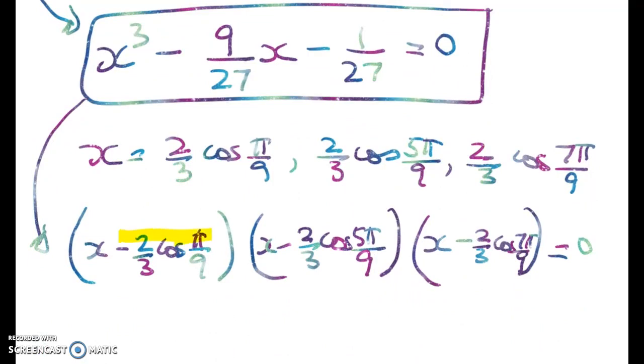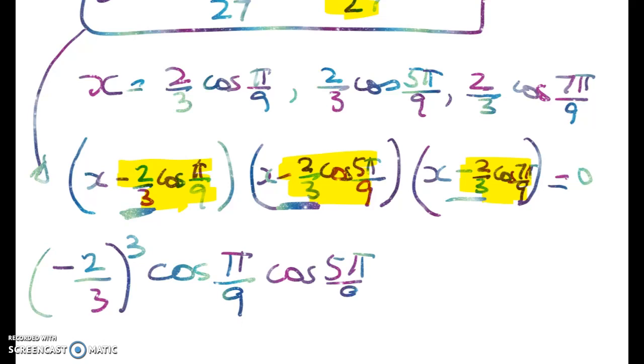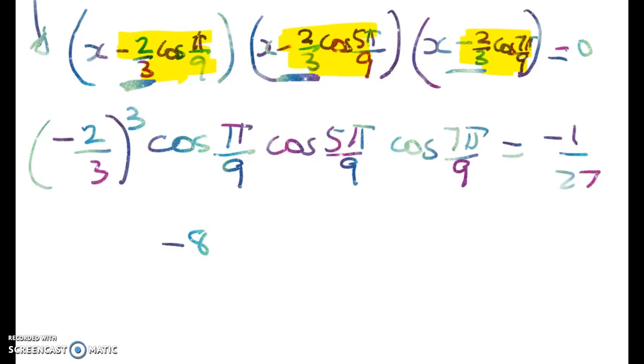So what can I say here? Well, if I do the same thing, if I multiply this times this times this, that's got to give me negative 1 over 27, which is pretty cool because now I can say negative 2 thirds, and I'm going to cube that because it's coming in here, here, and here, times cos of pi on 9, cos of 5 pi on 9, cos of 7 pi on 9 is equal to negative 1 over 27. So I'm going to go really fast here because I'm hitting my 15 minute limit. But what I end up getting from that is negative 8 on 27 times all of that stuff is equal to negative 1 over 27.